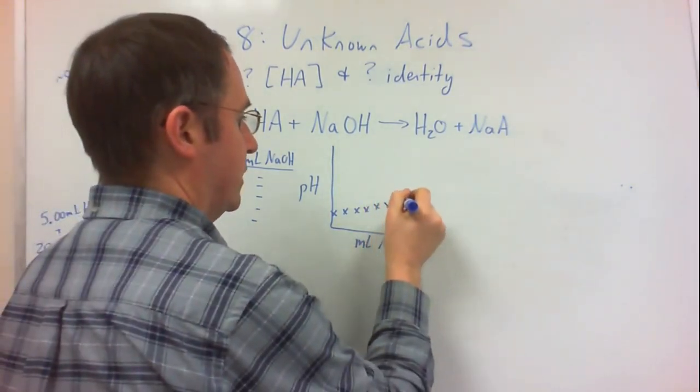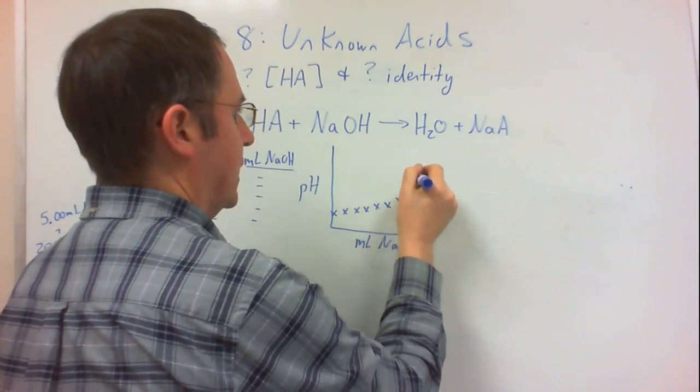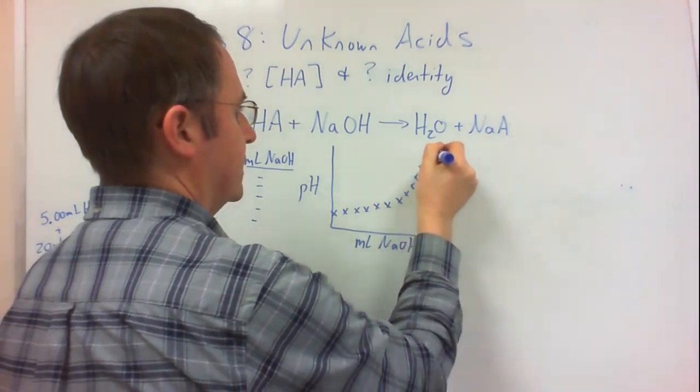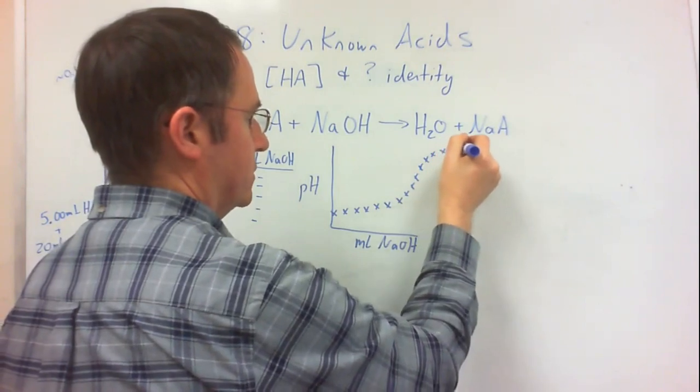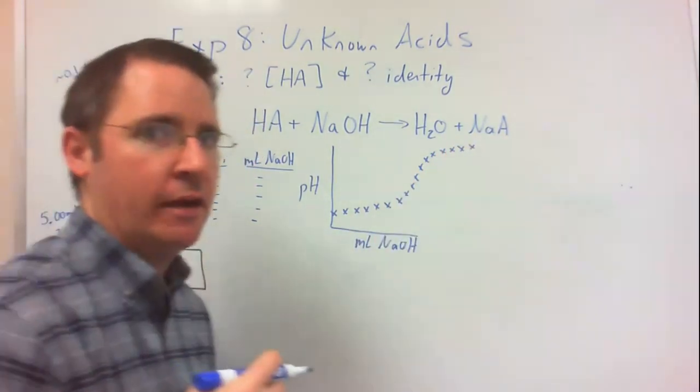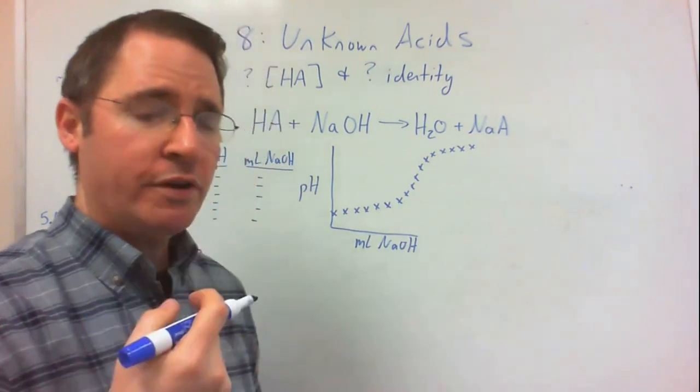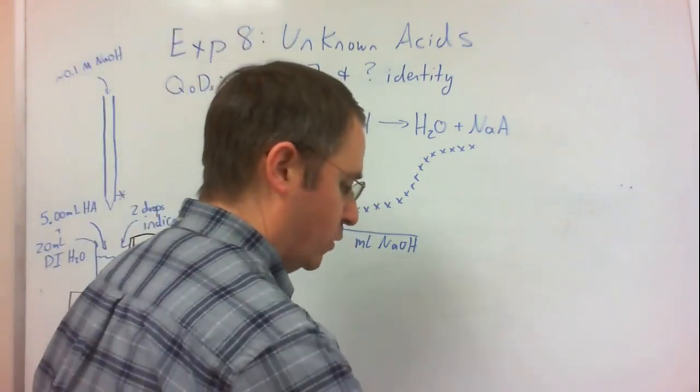Then it will change, increase rapidly for a time, and then continue to increase but once again slowly. And of all these data points on our titration curve, the most important one is what's called the equivalence point.